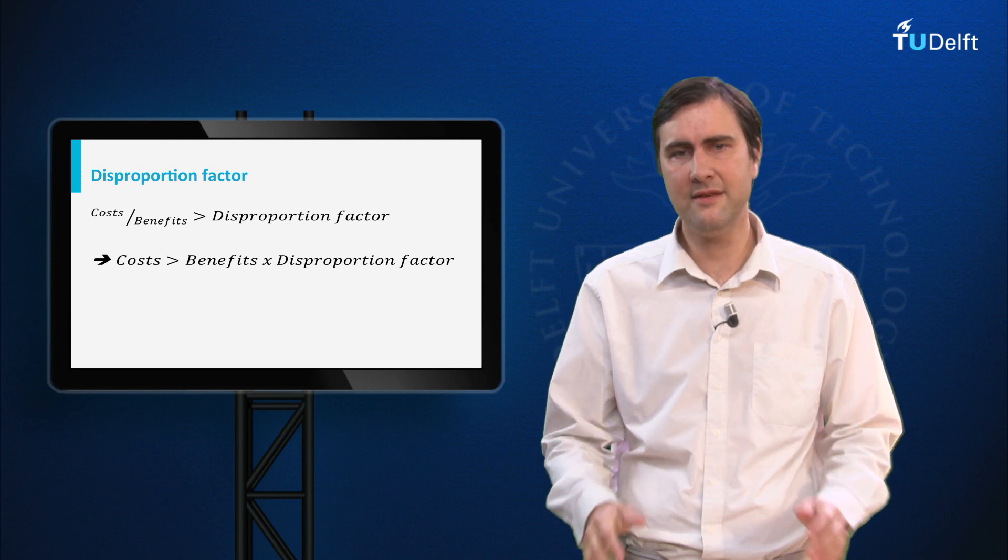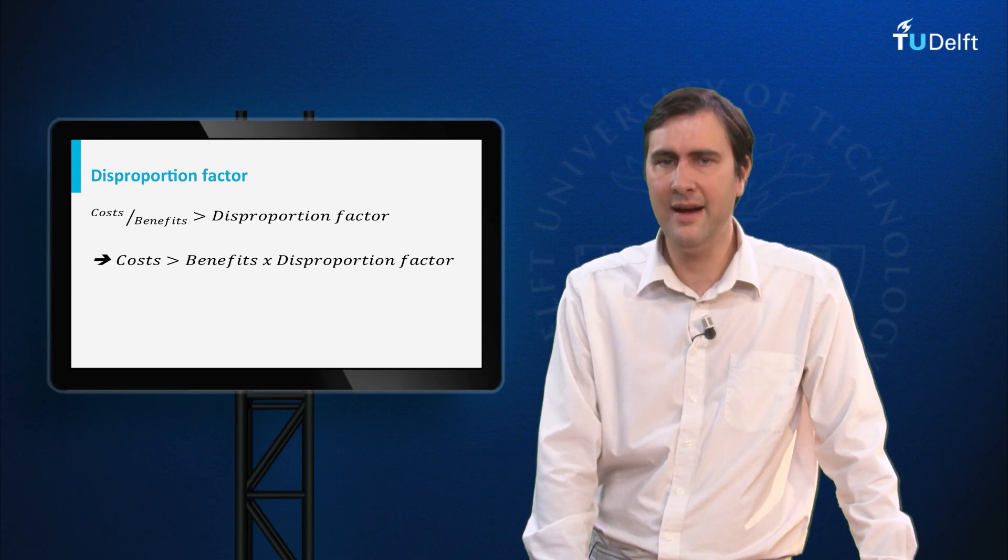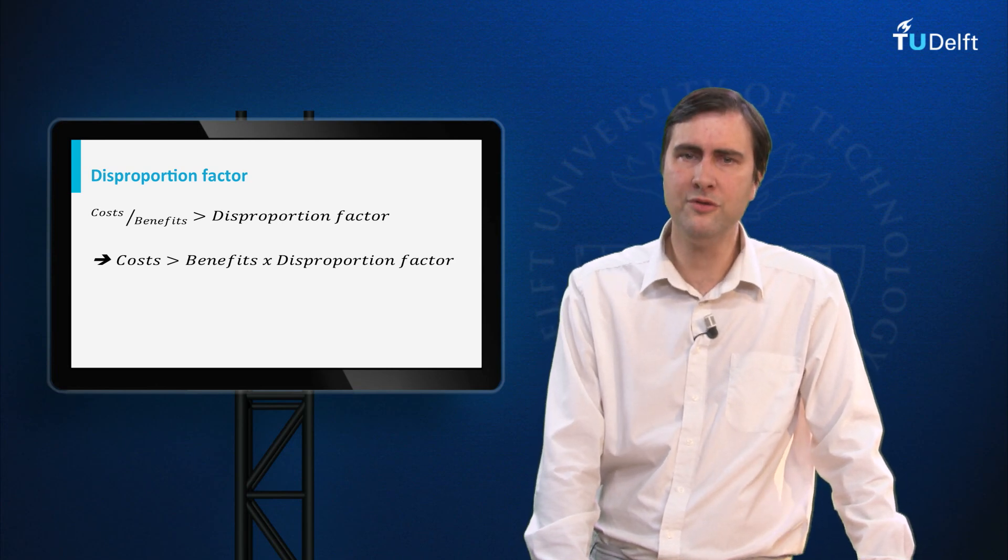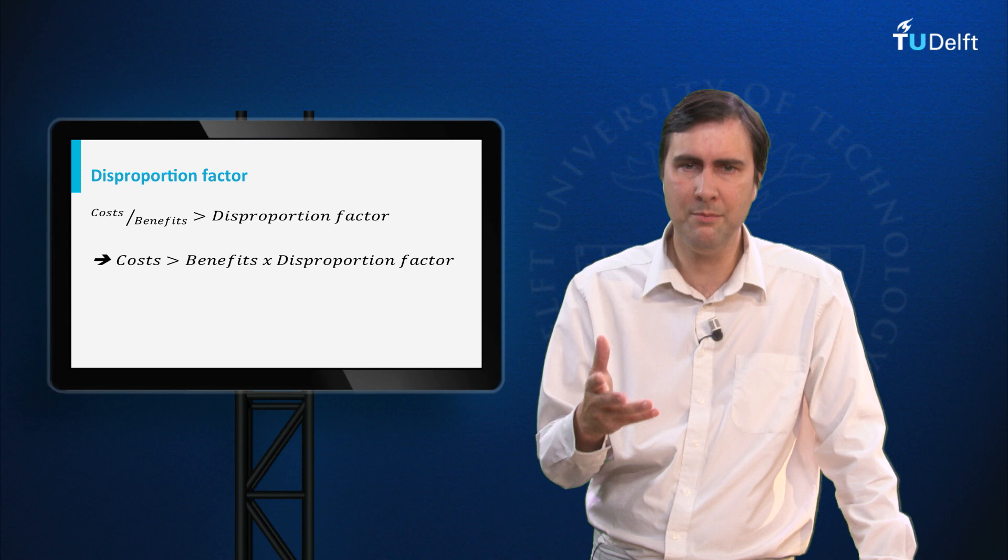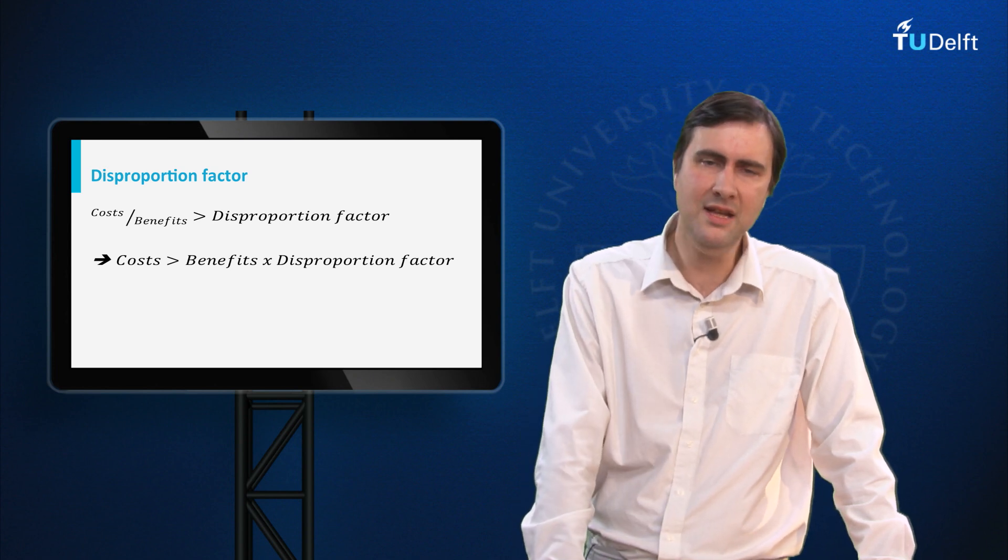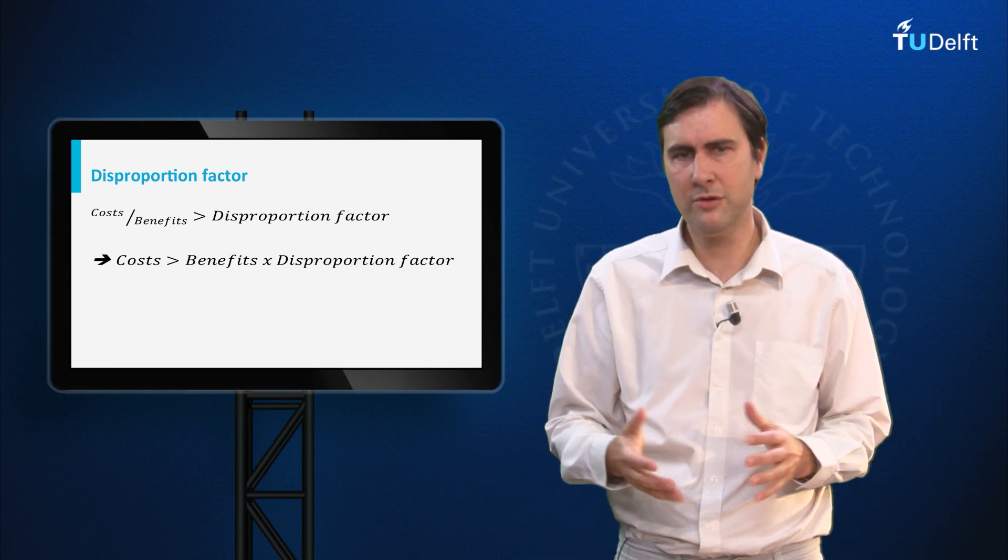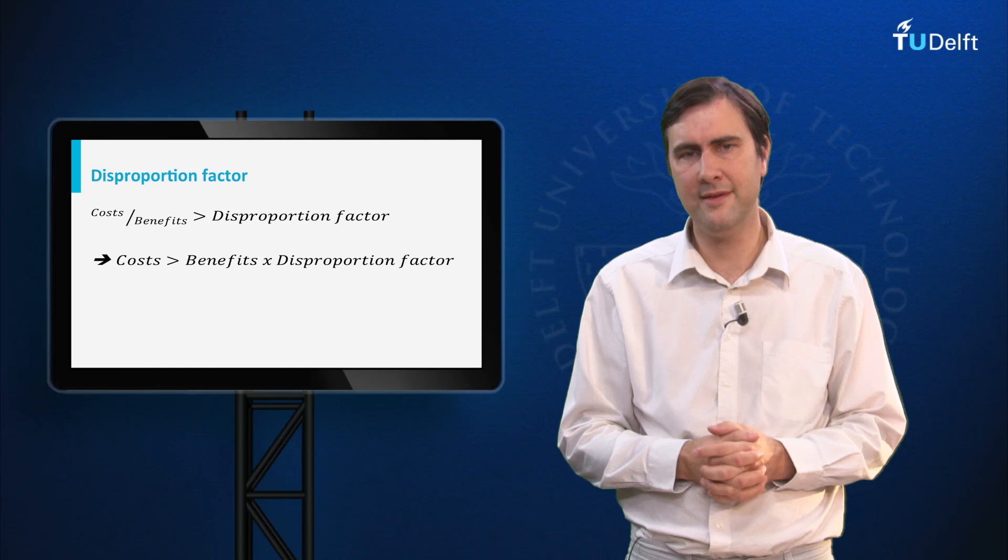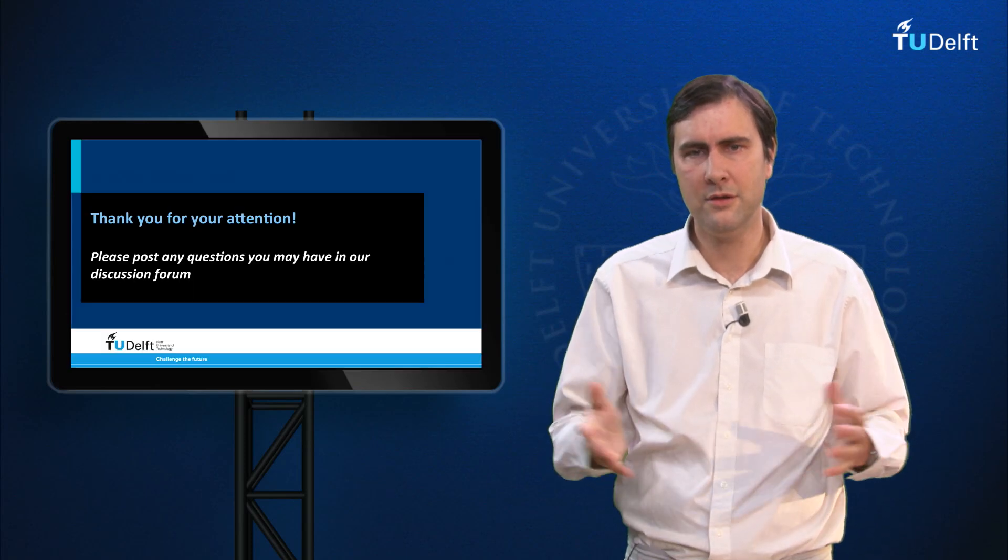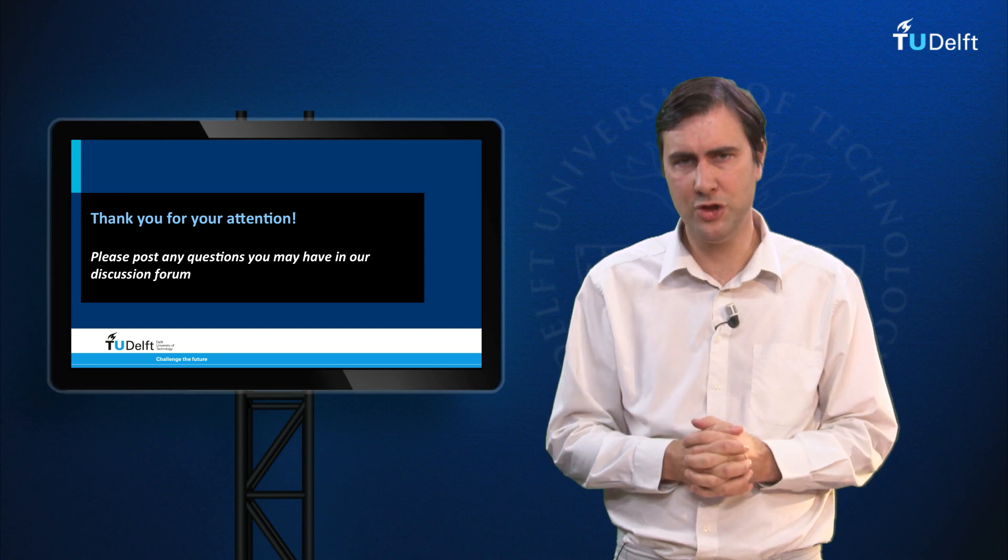In order to give an idea about the size of the disproportion factor, guidelines state that the disproportion factors are rarely greater than 10, and that the higher the risk, the higher the disproportion factor should be, in order to stress the magnitude of those risks in the cost-benefit analysis. This means that in cases where the risk is very high, it might be acceptable to use a disproportion factor greater than 10. So with this last message, I thank you very much for watching.